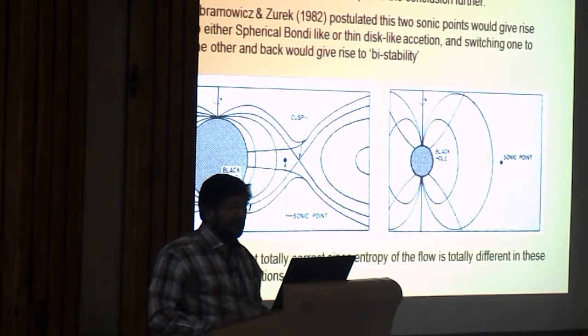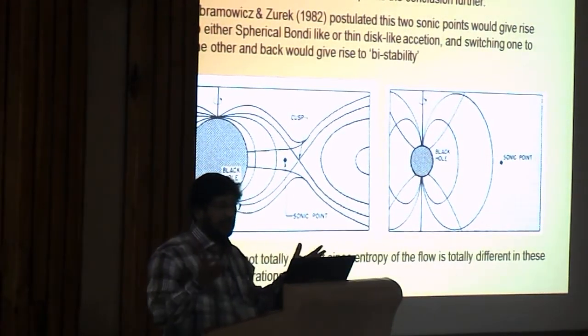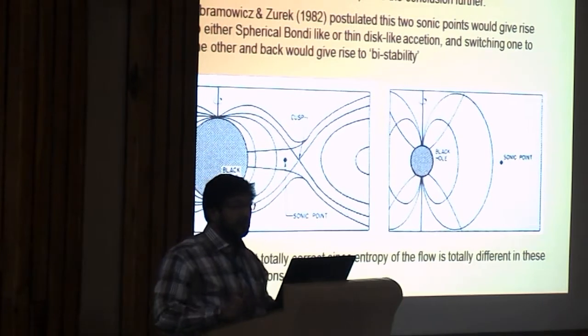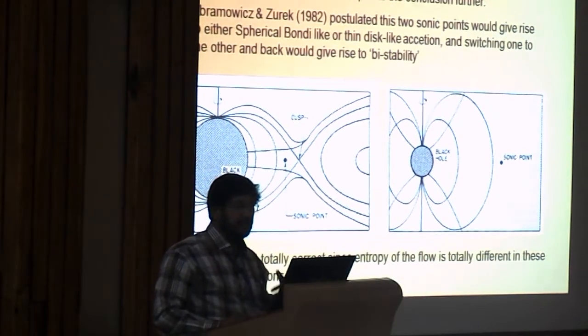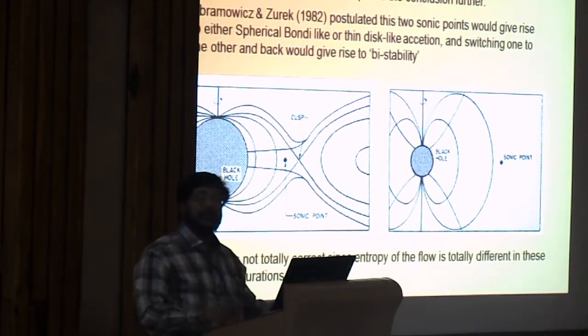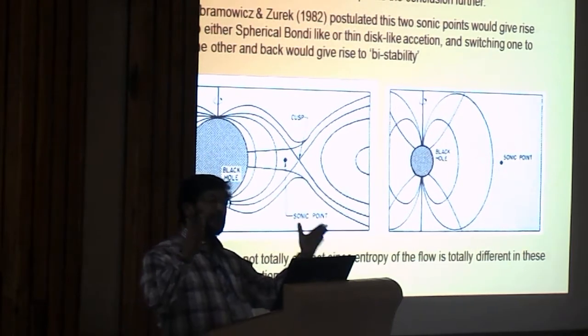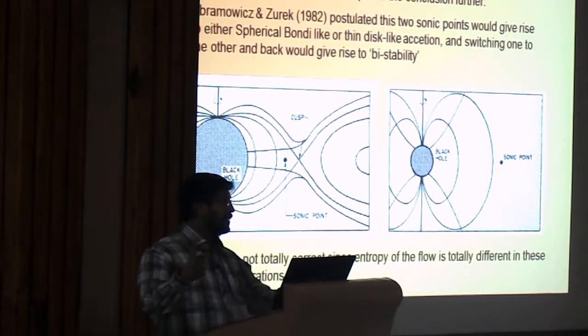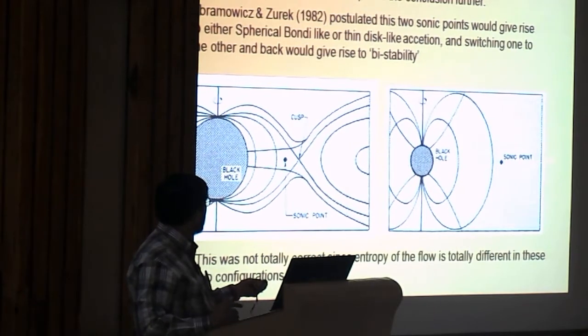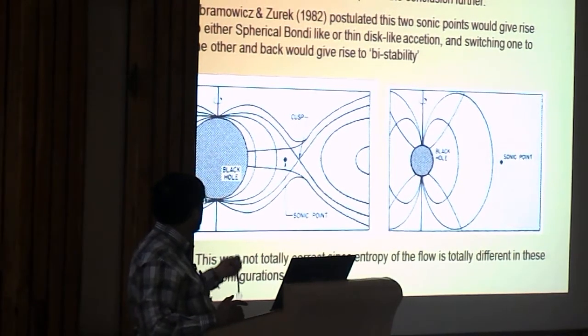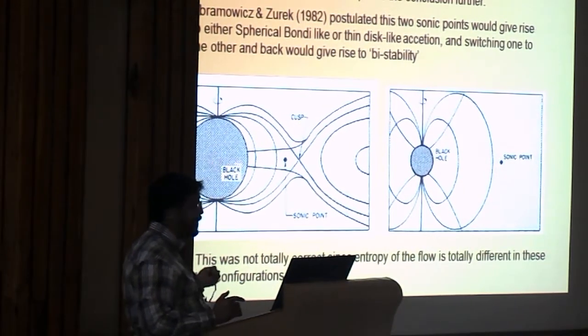So, in the meantime something else happened that theorists, people are also trying hard. People realize, Abramowicz, Zurek, Paczynski, Begelman and Chakrabarti, etc. They realize that the figure, the paper disk was chopped up at three Schwarzschild radii. Something has to be done. So that that matter from three Schwarzschild radii can actually enter into black hole.